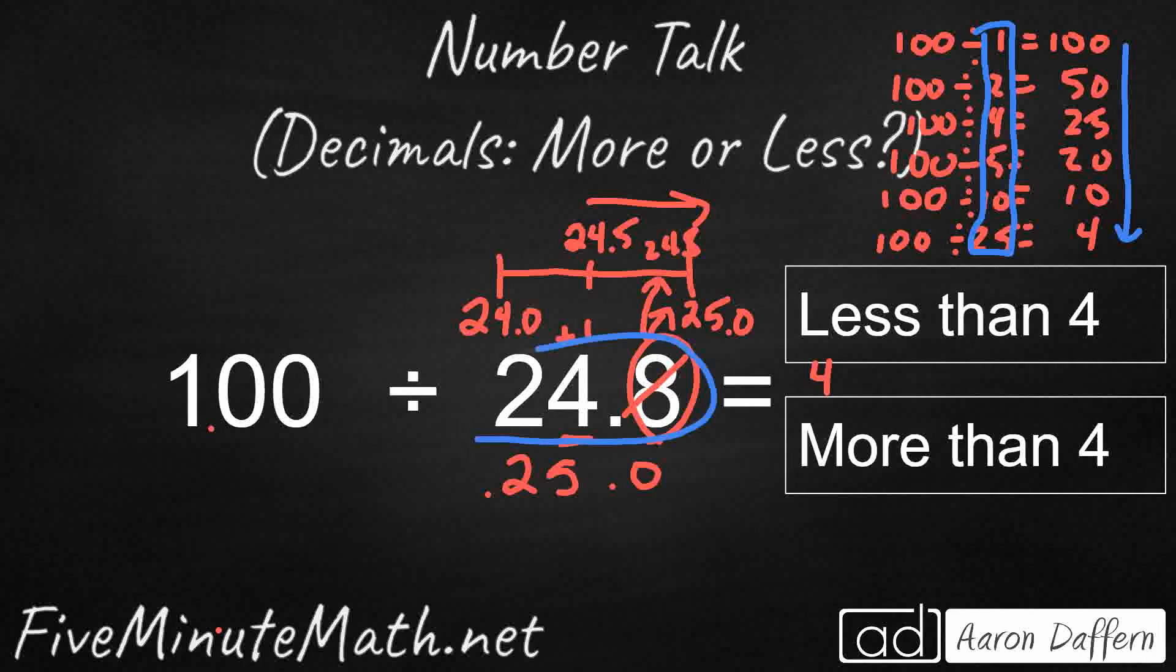So where does this land? This 24.8, even though it rounded up to 25, it's actually a little bit less than 25, isn't it? So if it's a little bit less than 25, right? It's going to be right here. It's going to be pretty close to that 25, but it's going to be a little bit less than the 25.